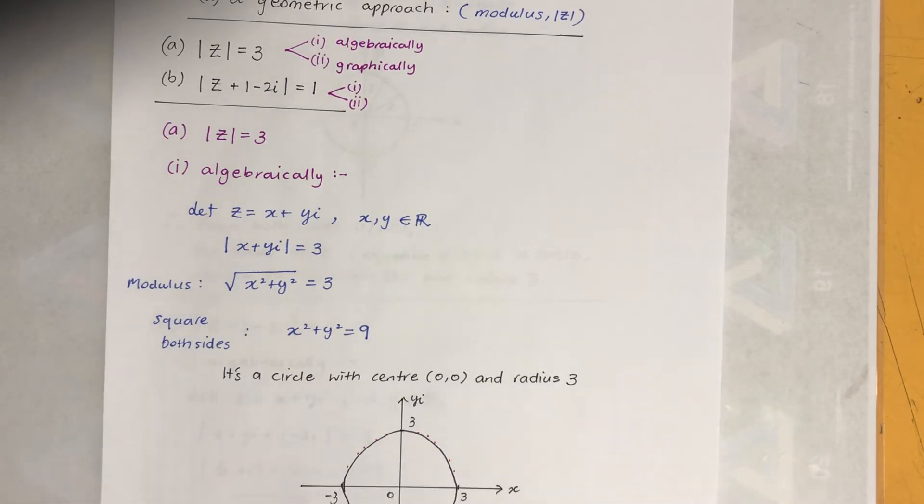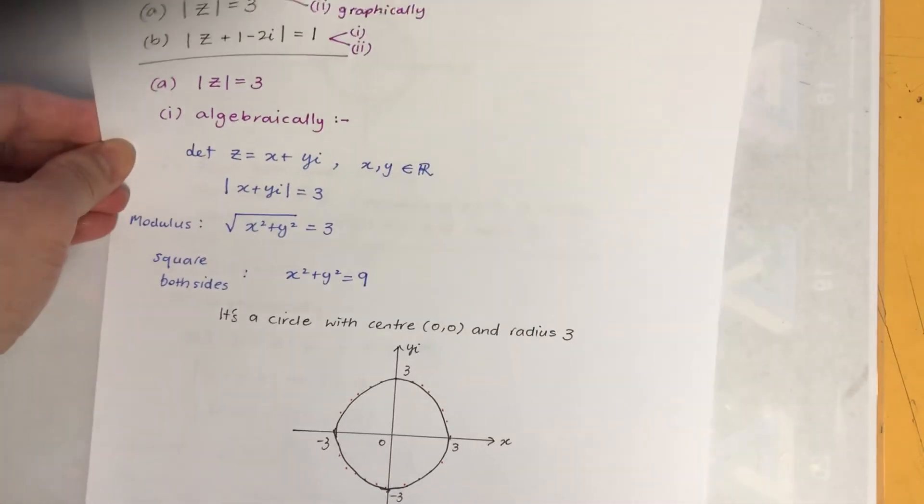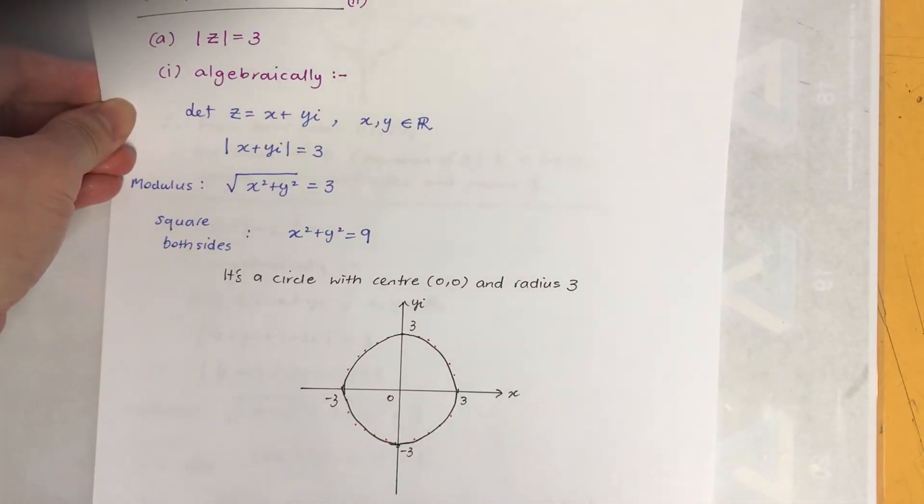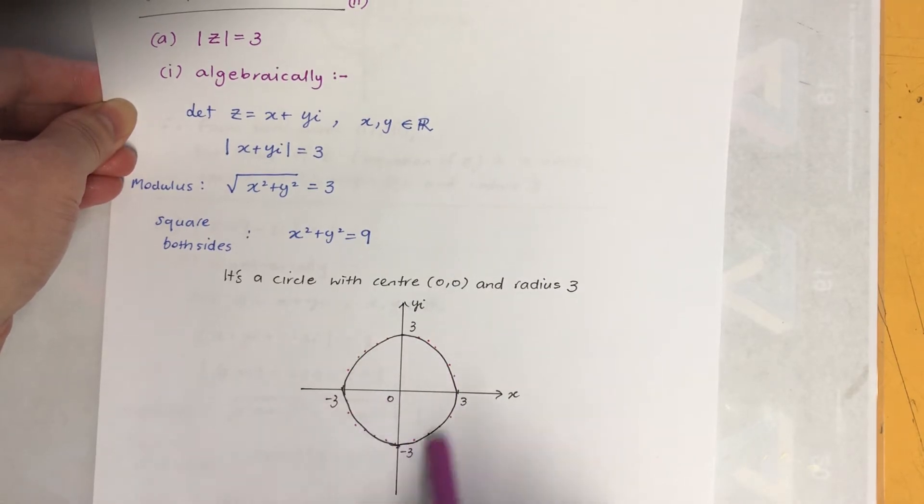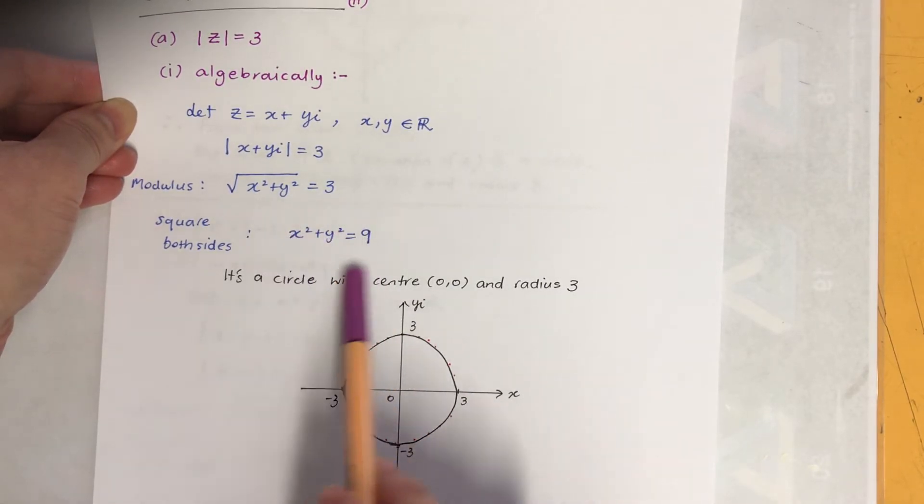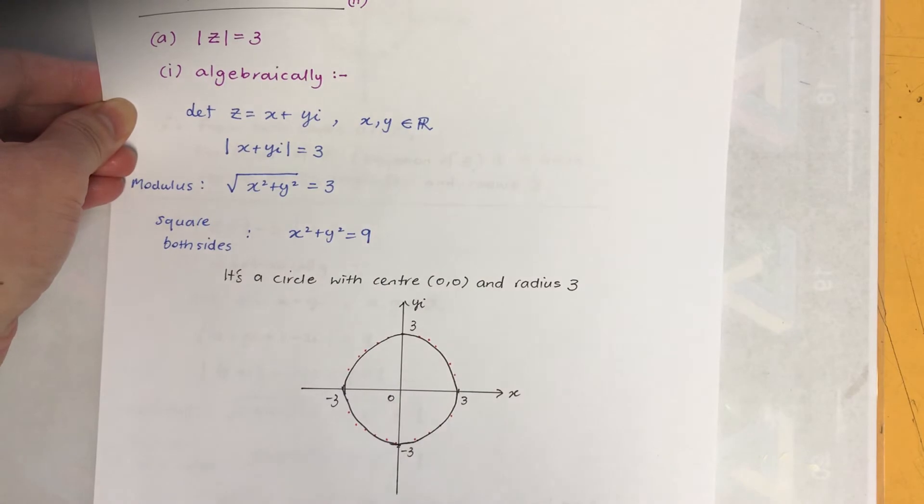So if I sketch that I will get something like this. Okay, so little red dots, it's just the set of dots that's the locus. So locus will be X squared plus Y squared equals 9.